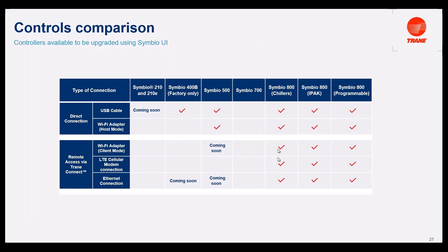In the case of the 700, there is no UI available for the Symbio 700. To conclude this table, for the 800 — in the versions for Chillers, IntelliPack, and the programmable — you can use all the possible ways to upgrade the firmware. For direct connection, you can use a USB cable or the Wi-Fi adapter in host mode. For remote access using Trane Connect, you can upgrade the firmware using Wi-Fi adapter in client mode, LTE cellular modem connection, and Ethernet connection.